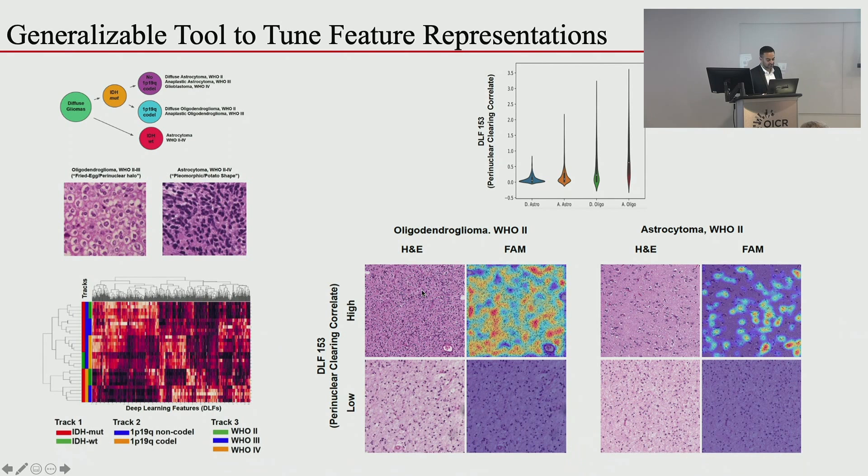Interestingly, a low-feature-153 tile from an oligodendroglioma was shown to neuropathologists — they all said it looked like an astrocytoma. This shows we can pick out specific features we understand very well, and in fact trick pathologists by dialing up or down these specific features.